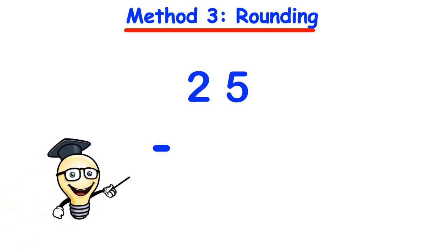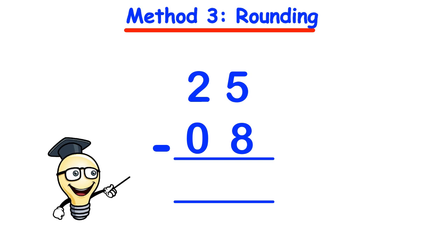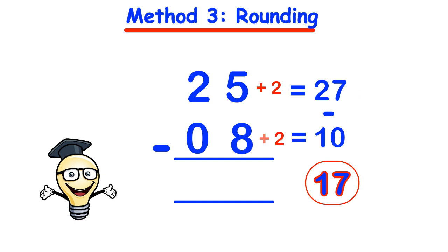Let's take a look at how this compares to the method of rounding, which also avoids borrowing. Considering the first sum, 25 minus 8, we round the bottom number to the nearest 10, 100 or 1000 depending on how many digits there are, and whatever number we add to the bottom we also add to the top. Since 8 is a one-digit number, we round to the nearest 10 by adding 2 to both numbers. So 25 add 2 gives 27, and 8 add 2 is 10. The new sum is 27 take away 10, which is just 17. This avoids any notion of borrowing.